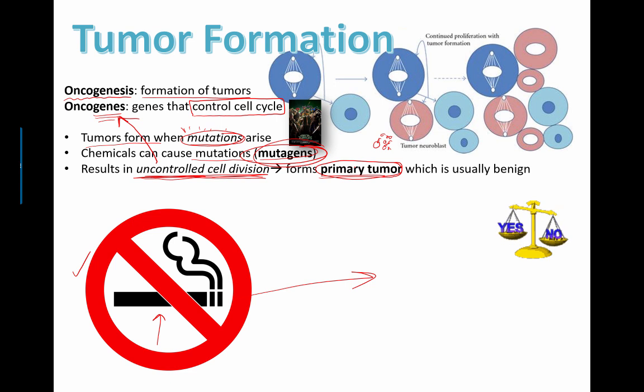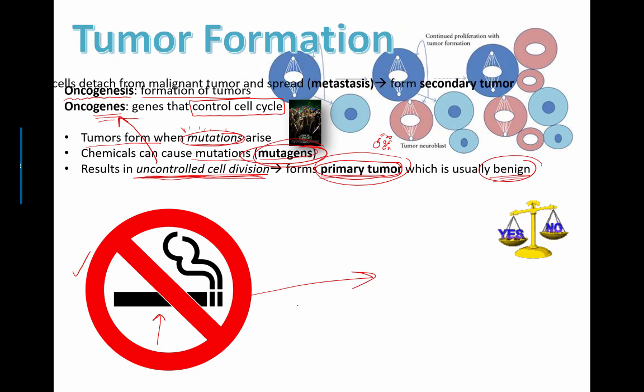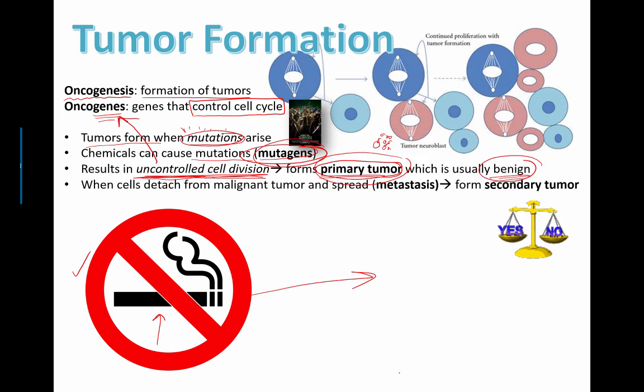A primary tumor is that first growth of cells. And usually it's benign. Benign kind of sounds like a nice thing, right? Sounds like benevolent for you SAT vocab studiers out there. Benign means kind of nice. Usually, this can be removed with some surgery and no big deal. But if that tumor actually grows and breaks off and starts spreading to other parts of the body, it's called metastasis or metastasis, depending on where you're from in the world. And that can cause secondary tumors to form.